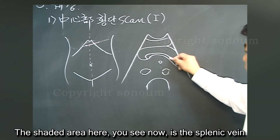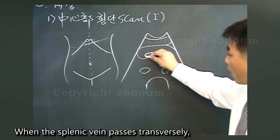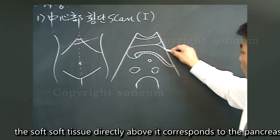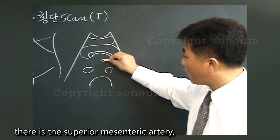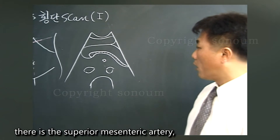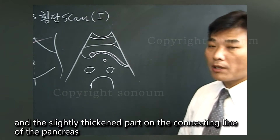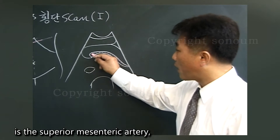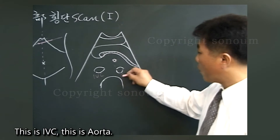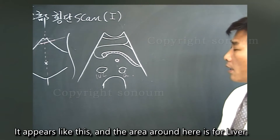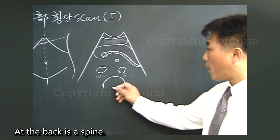The shaded area you see now is the splenic vein. When the splenic vein passes transversely, the soft tissue directly above it corresponds to the pancreas. At the back of the pancreas there is the superior mesenteric artery, and the slightly thickened part on the connecting line of the pancreas is the superior mesenteric artery and the superior mesenteric vein. This is the IVC, this is the aorta, and the area around here is for liver. At the back is the spine.